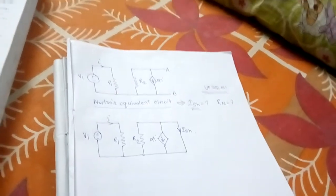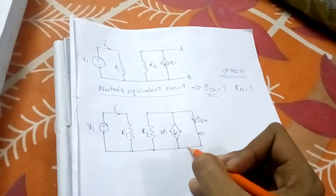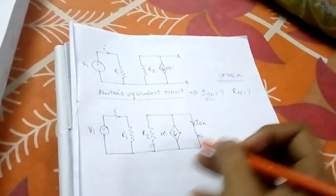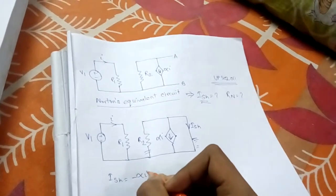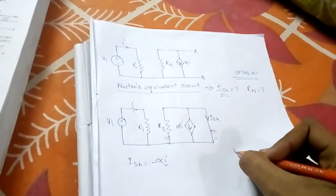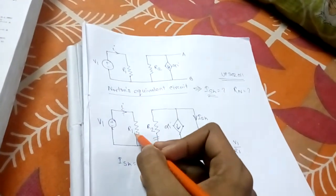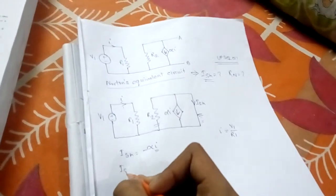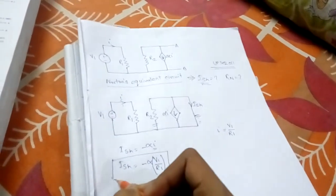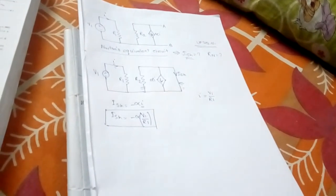Since the terminal is short-circuited, the whole current passes through that branch — none through the other branch because it has zero impedance. So I_sh equals minus alpha·I. Now, applying KVL in this loop: V1 = I·R1, so I = V1/R1. Therefore, I_sh = minus alpha·V1/R1.